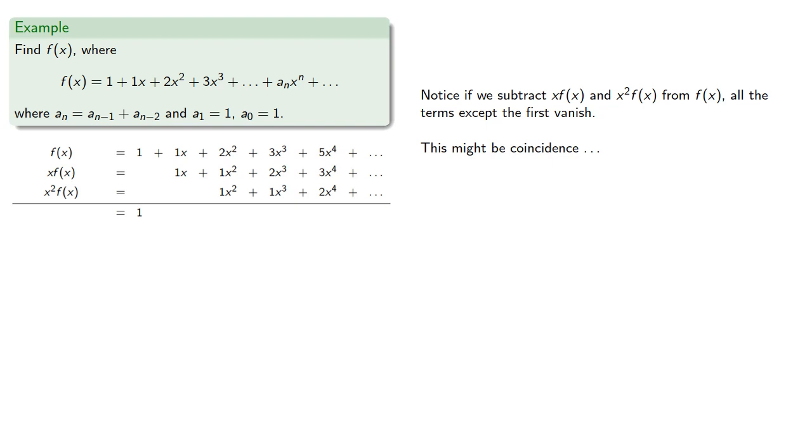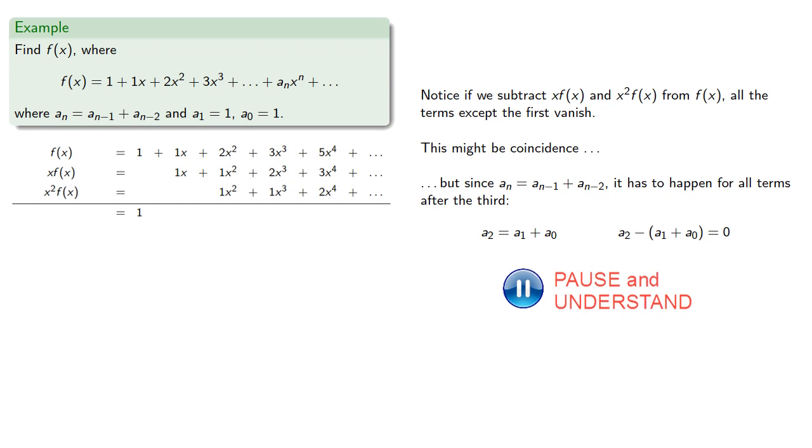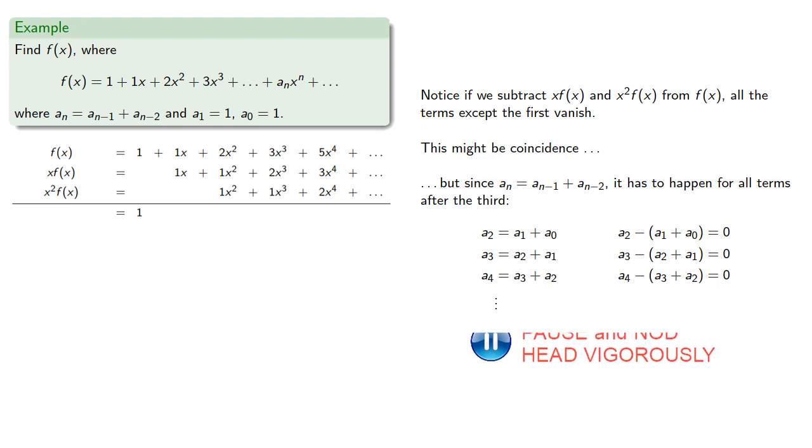This might be coincidence, but since a_n is a_{n-1} plus a_{n-2}, it has to happen for all terms after the third. a_2 is a_1 plus a_0, so a_2 minus a_1 plus a_0 has to be 0. a_3 is a_2 plus a_1, so a_3 minus a_2 plus a_1 is 0. a_4 is a_3 plus a_2, so a_4 minus a_3 plus a_2 is 0, and so on.